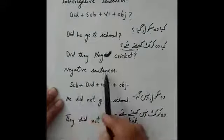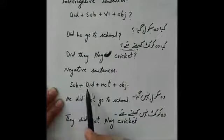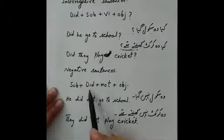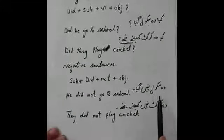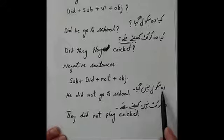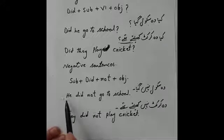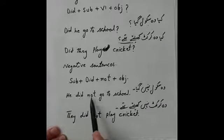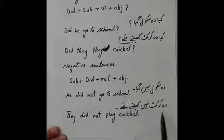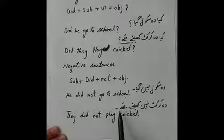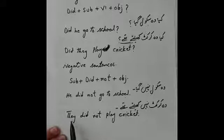Negative sentence کا structure: سب سے پہلے subject، پھر helping verb did، پھر not، اس کے بعد first form of verb، اور پھر object۔ مثال: وہ سکول نہیں گیا → He did not go to school۔ وہ cricket نہیں کھیلتے تھے — وہ third person plural ہے تو: They did not play cricket۔